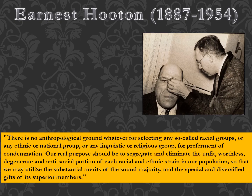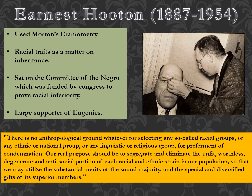Ernest Hooton used Morton's craniometry to claim racial traits are a matter of inheritance and sat on the Committee on the Negro, founded by Congress to prove racial inferiority in the US. He was a large supporter of the eugenics movement. His work stated that society should 'segregate and eliminate the unfit, worthless, degenerate, and anti-social portion of each racial and ethnic strain,' so as to preserve what he called the superior members of the population.